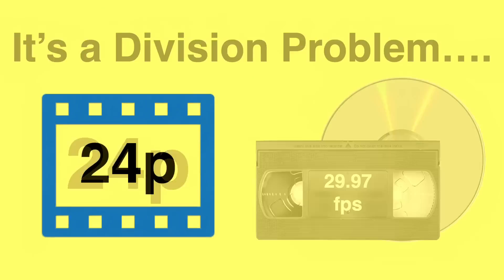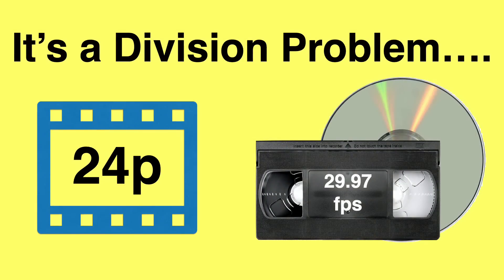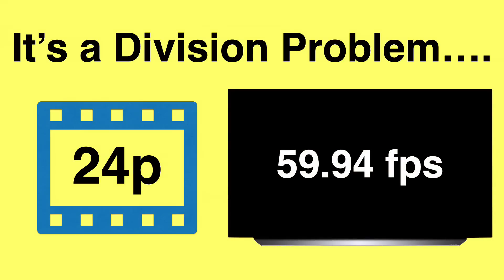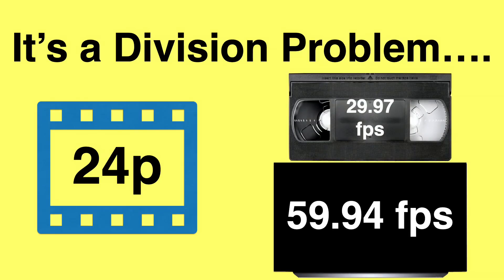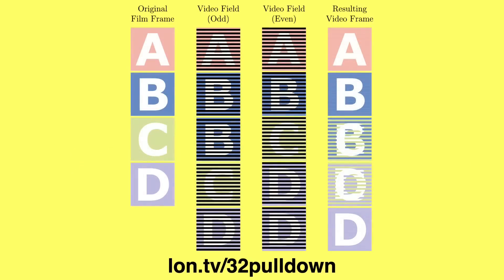The problem you run into is that you've got a division problem. Back in the old days with VHS tapes and DVDs, our TVs ran at essentially 29.97 frames per second and you had to convert 24p source into something that would play back smoothly at that frame rate. In more modern times, televisions typically run at 59.94 frames per second, or 60p, but the problem is you cannot evenly divide either 29.97 or 59.94 by 24p. So you have to get creative to get this video to play back smoothly and still retain audio synchronization.